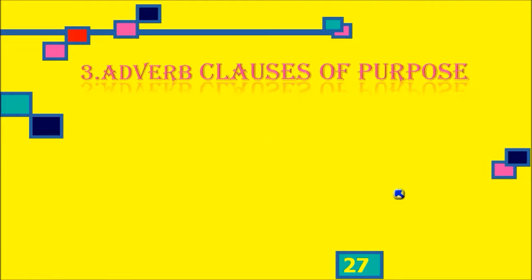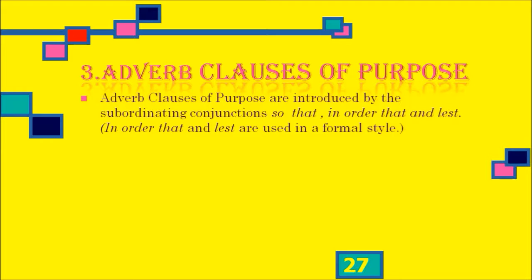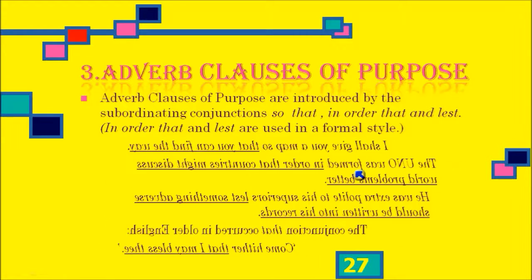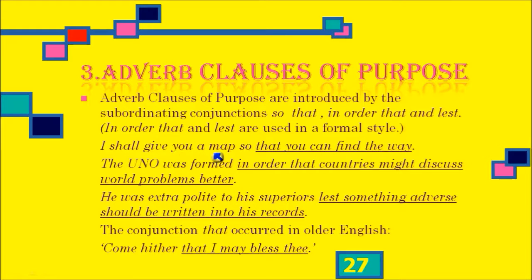Next is adverb clauses of purpose. This is very important and you must understand it well. Adverb clauses of purpose are introduced by the subordinating conjunctions: 'so that,' 'in order that,' and 'lest.' These are very important as you will face them in exams — in transformation of sentences or in joining. Note that 'lest' and 'in order that' are used in formal style, while 'so that' is informal.